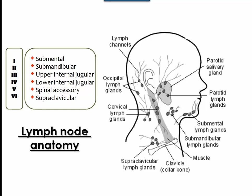Considering the lymph nodes of the neck, we use a reliable descriptive grouping system. Group 1 is the submental group. Group 2 are lymph nodes around the submandibular salivary glands. Groups 3 and 4 are the upper and lower deep cervical lymph nodes along the internal jugular, deep to the sternomastoid, divided by the hyoid bone. Group 5 is the spinal accessory or posterior group, and finally the supraclavicular nodes.